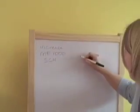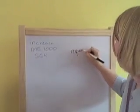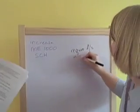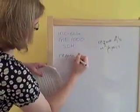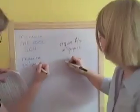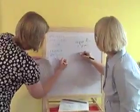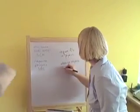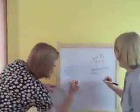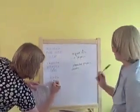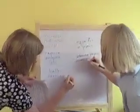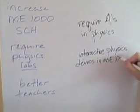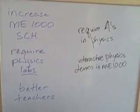We need them to improve their knowledge of physics, so we could require A's in physics. Or we could require that students do the physics labs — I like that. We could also do interactive physics demos in ME 1000. Maybe we should get better teachers — if we increased faculty salaries we could definitely do better. And we could have students do extra homework.